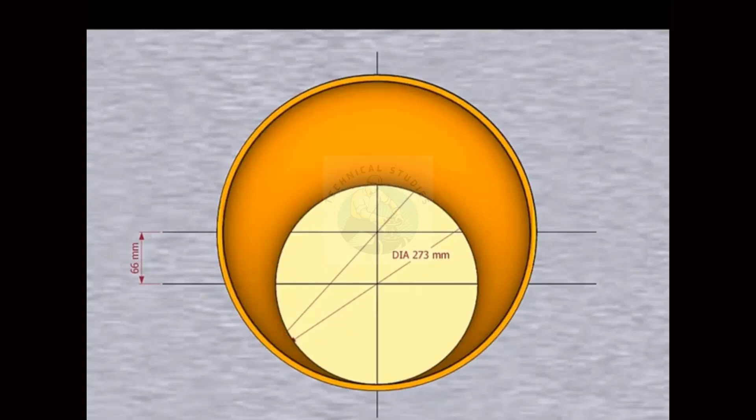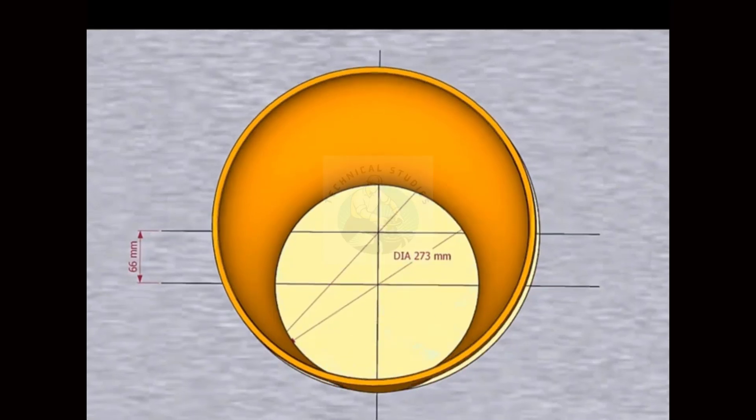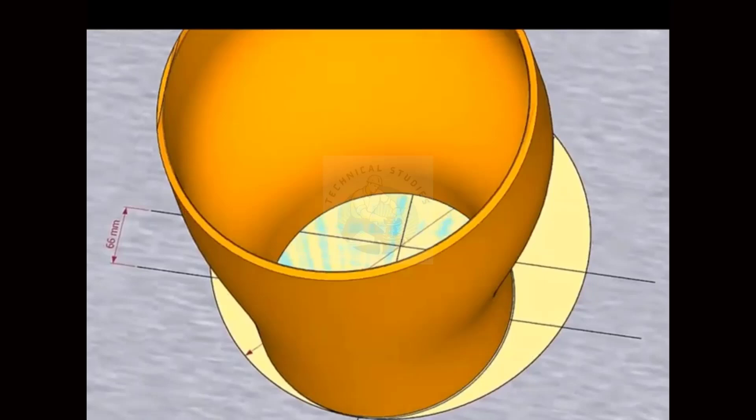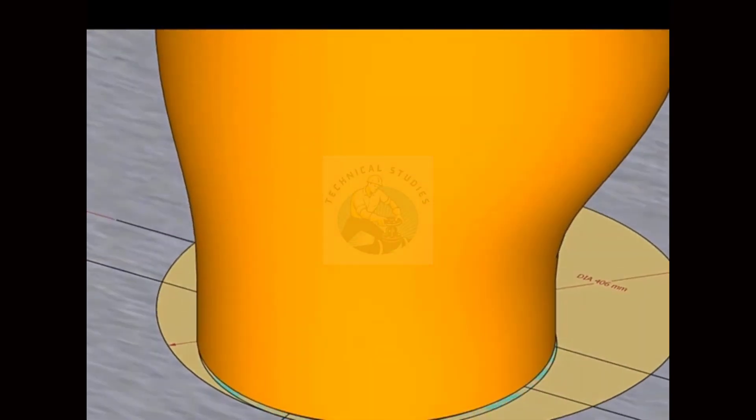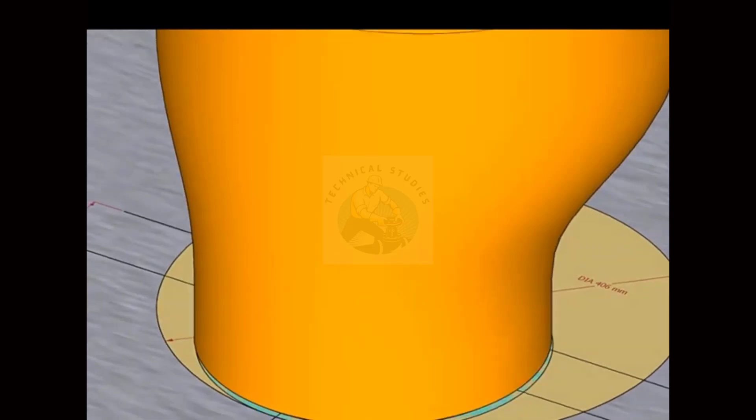Place the reducer on the layout, facing the small end down. Inspect carefully if the reducer sits on the circle correctly.